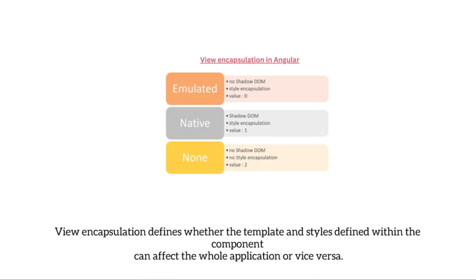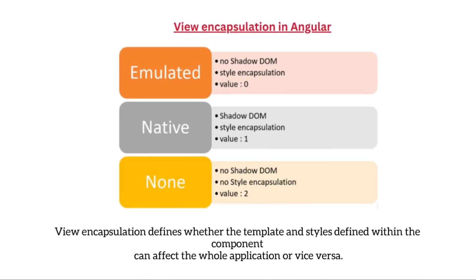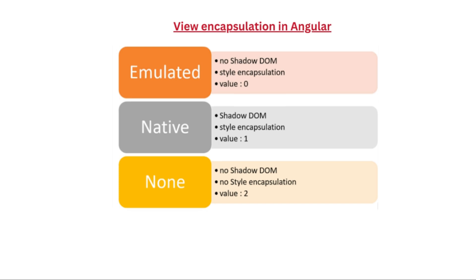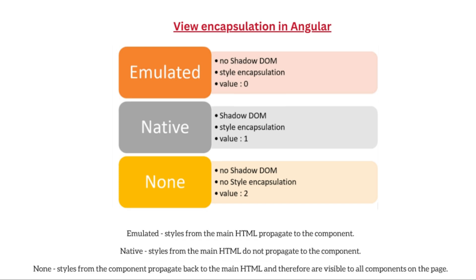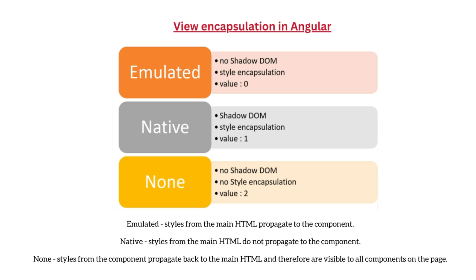View encapsulation defines whether the template and styles defined within the component can affect the whole application or vice versa. Angular provides three encapsulation strategies: Emulated, where styles from the main HTML propagate to the component; Native, where styles from the main HTML do not propagate to the component; and None, where styles from the component propagate back to the main HTML and are visible to all components on the page.